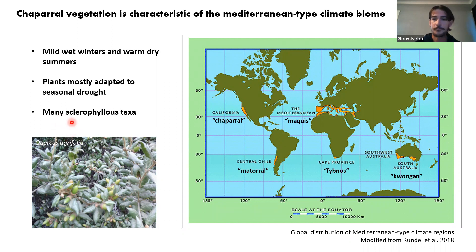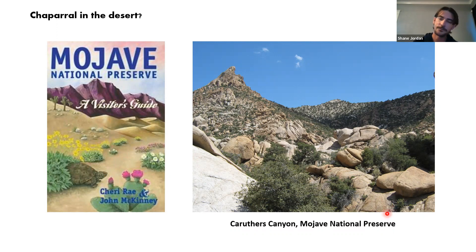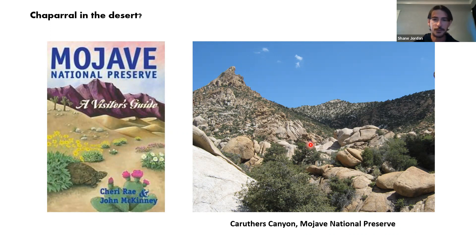What about chaparral in the desert? I first encountered this in a book called A Visitor's Guide to Mojave National Preserve by Sherry Ray and John McKinney, which describes coastal chaparral occurring within pinyon-juniper woodlands in the New York Mountains of Mojave National Preserve. After visiting on several occasions and developing botanical knowledge, I started to survey vegetation and found some unusual plant occurrences in this environment.